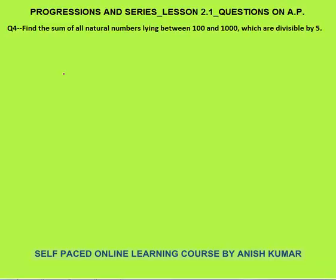Question 4: find the sum of all natural numbers lying between 100 and 1000 which are divisible by 5. Since the question says 'between', 100 and 1000 are not included. The first number divisible by 5 will be 105, then 110, 115, and so on. The last number will be 995, since all numbers ending in 5 or 0 are divisible by 5.